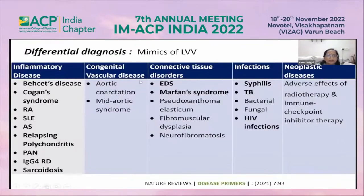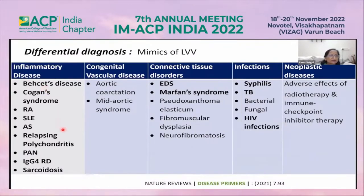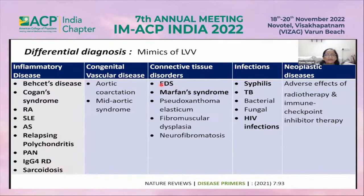There are certain mimics of large vessel vasculitis which we can confuse with the primary condition. Inflammation of the aorta and its branches can occur in Behçet's disease, Cogan syndrome, rheumatoid arthritis, SLE, ankylosing spondylitis, relapsing polychondritis, IgG4-related disease, sarcoidosis, connective tissue disorders, and infections like syphilis, TB, and HIV.